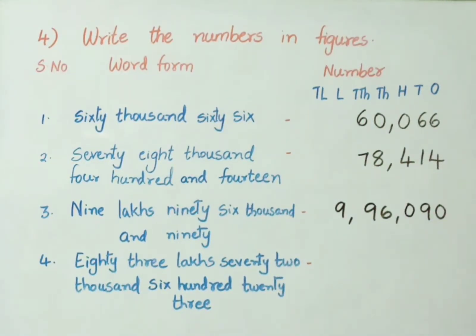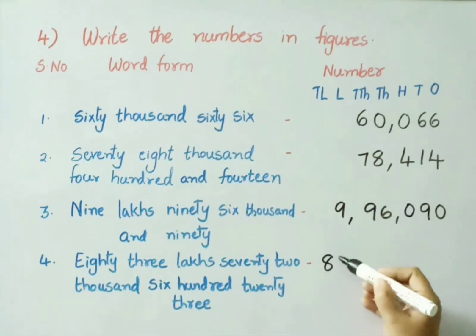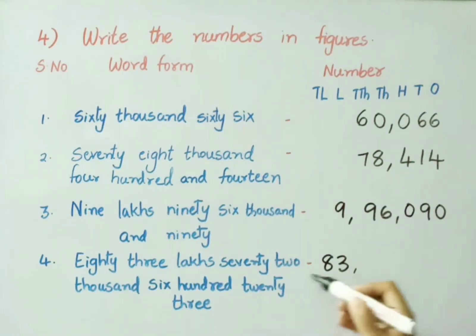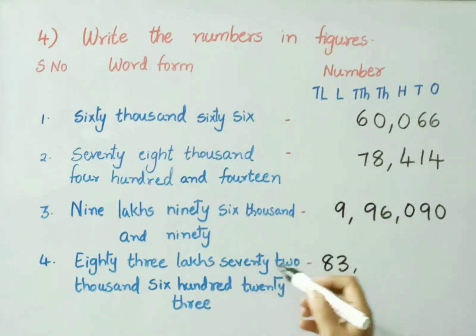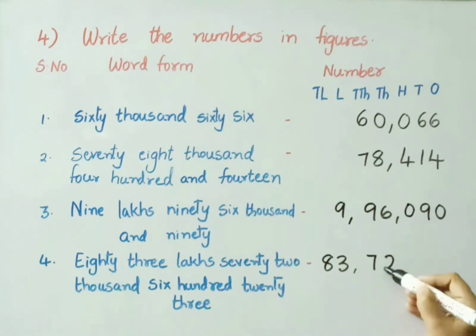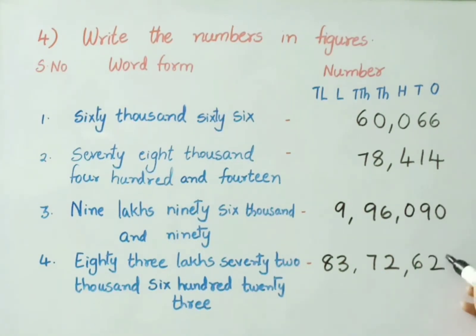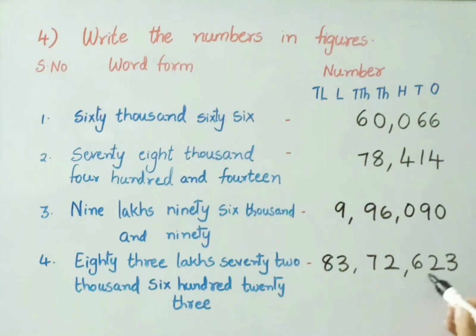See the fourth question: 83,00,000 under 10,00,000's and 1,00,000's place — mention 83. Next, 72,000: under 10,000's and 1000's place, mention 72. Next, 600 in the 100's place — put 6. Then 23 in 10's and 1's place. Now, the number is 83,72,623.